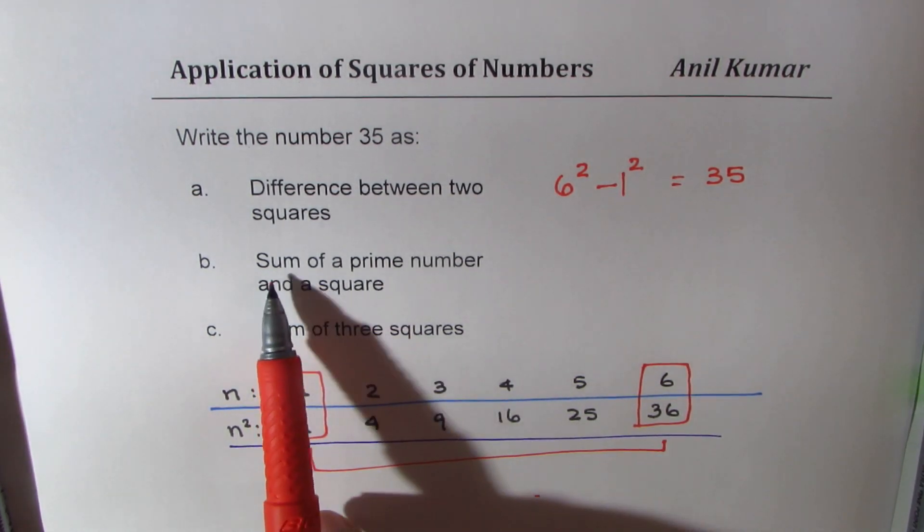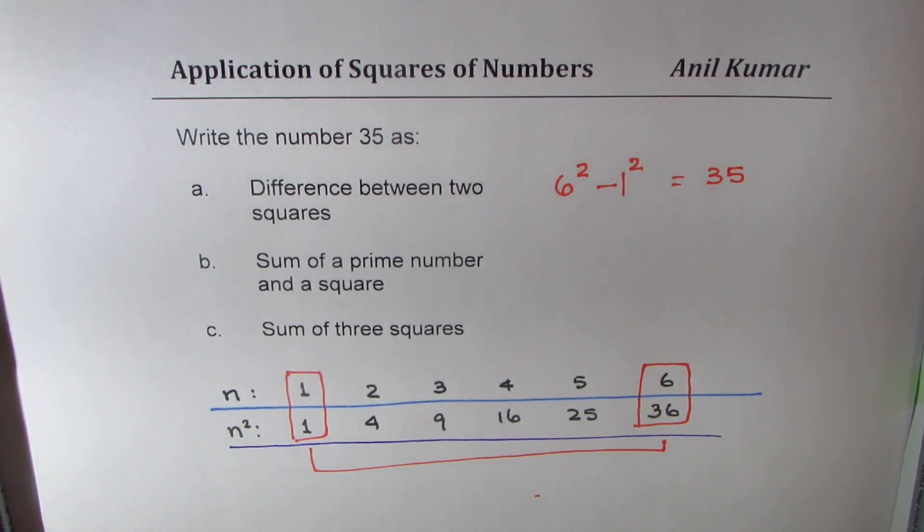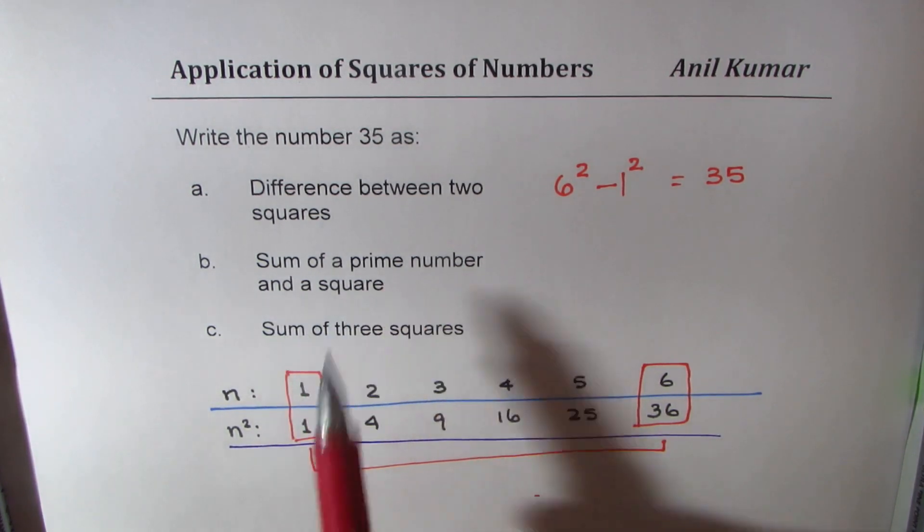Next is sum of a prime number and a square. You have to add a prime number and a square. Now, which combination can work? That is kind of tricky. So, what we can do here is look into these, sum of a prime number and a square.